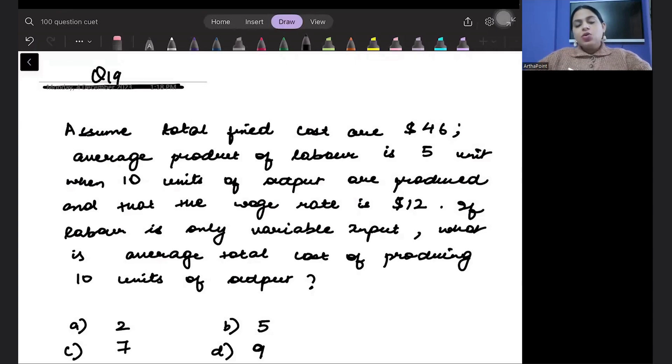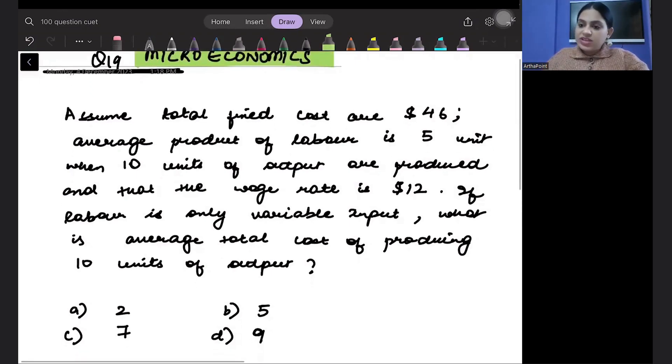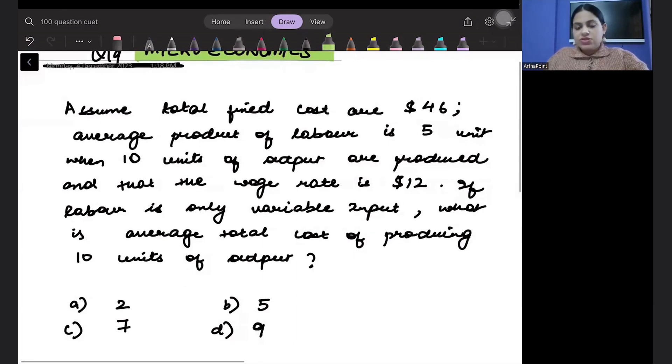Good evening, welcome to day 19 of 100 question 100 days test series of COED. Today we are going to take a question based on microeconomics. Today's question is a little difficult so we need to go very slow and very careful. Let's read.